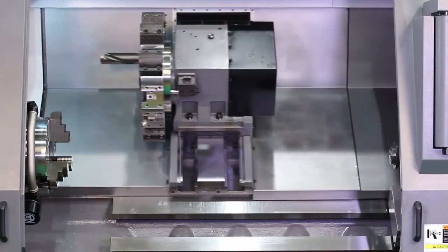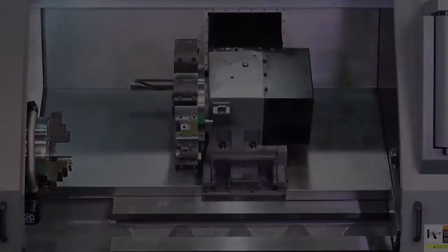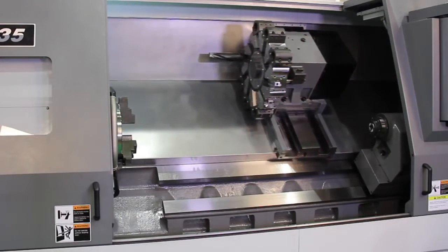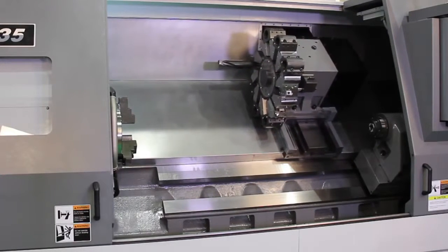It swings 23.6 inches over the bed and 16.7 inches over the cross slide. It has a turning diameter of 16.5 inches and a turning length of 60.2 inches.